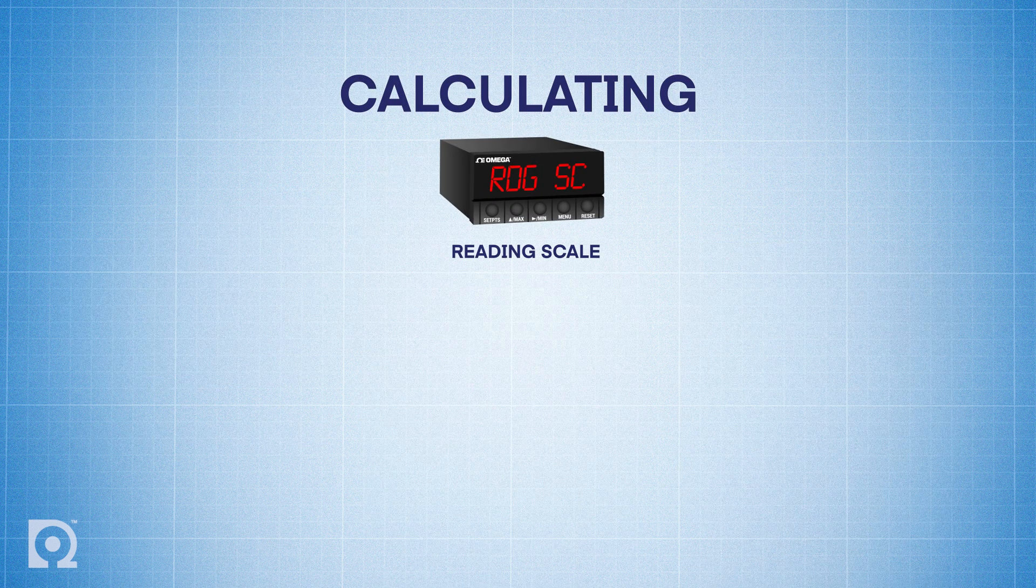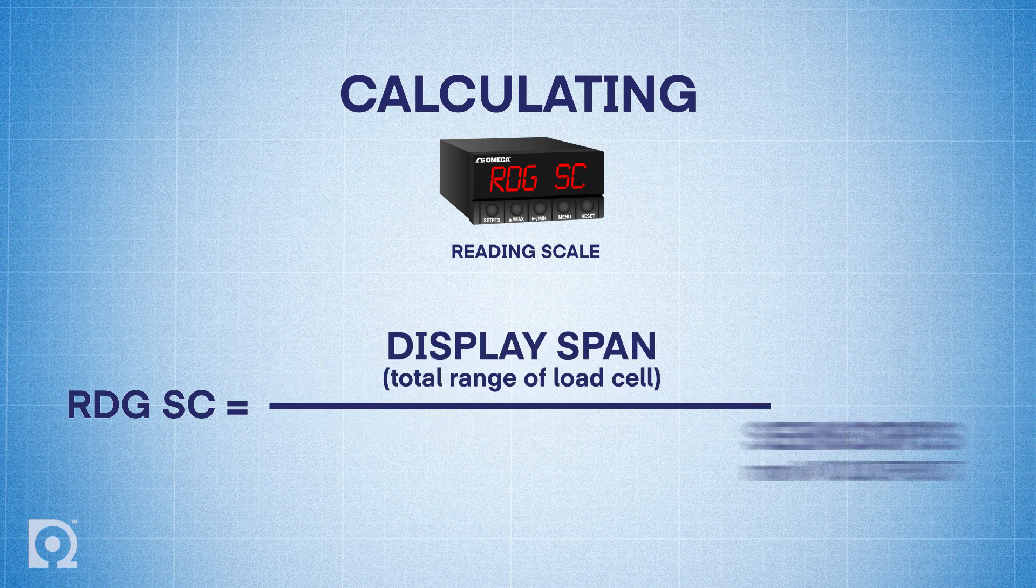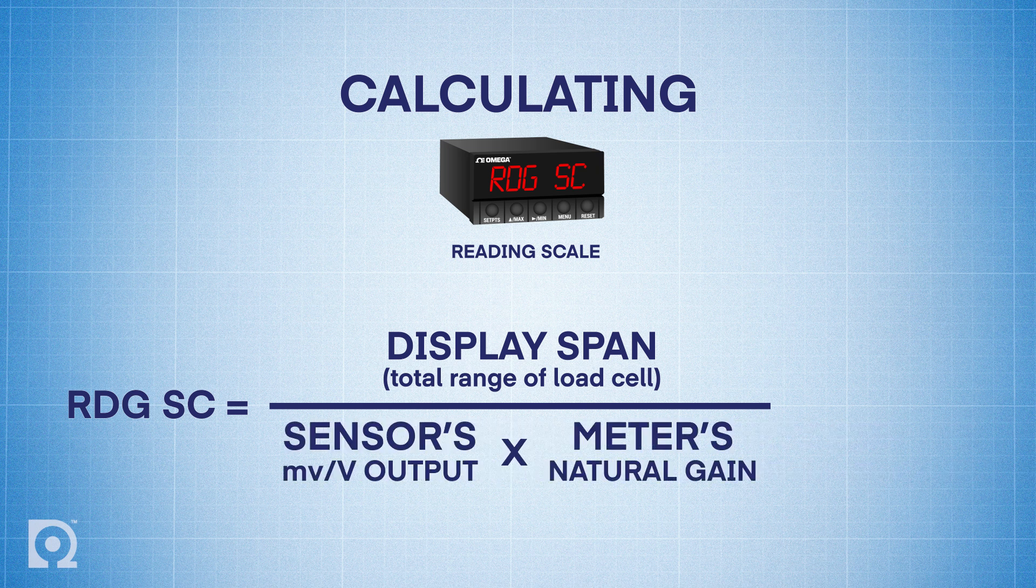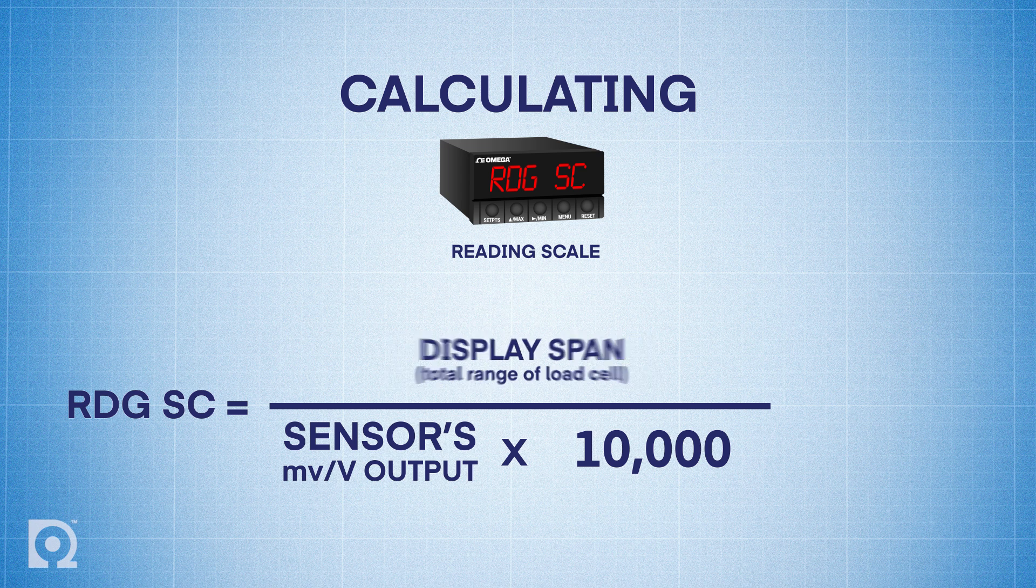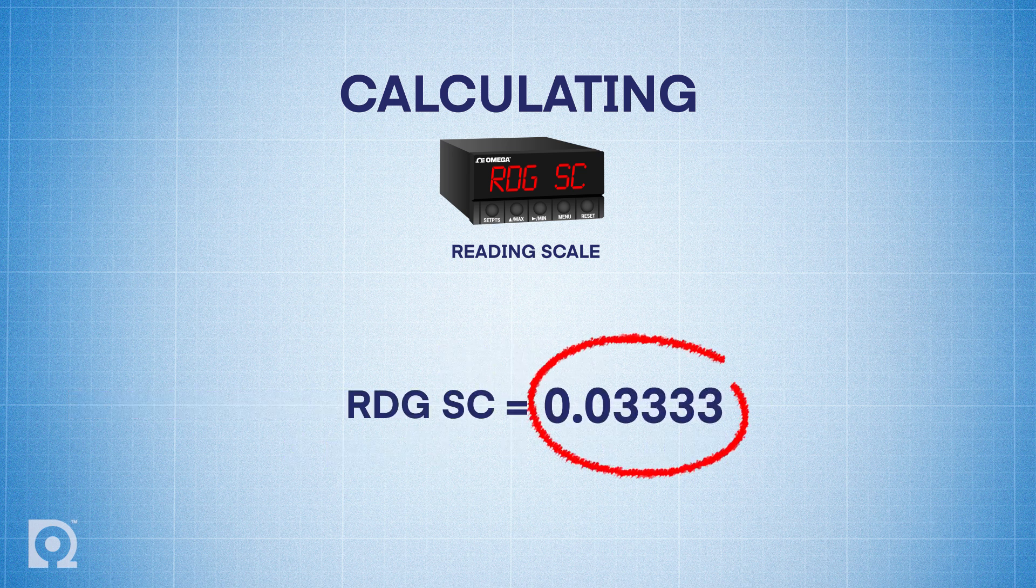To calculate your RDG-SC, we'll use the following formula. RDG-SC equals the display span, in other words, that's the total range of your load cell, divided by the sensor's millivolt per volt times natural gain of the meter, which also happens to be 10,000. So for example, in this instance, we have a thousand pound load cell, and it has a three millivolt per volt sensitivity. This sensitivity can be found by referring to your calibration certificate that shipped with your load cell. So your RDG-SC would be thousand divided by three times 10,000, which comes up to 0.03333.